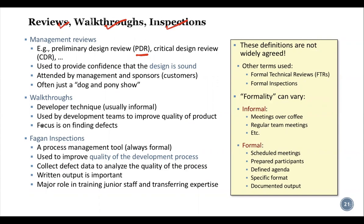The Vagan inspection is one type of formal inspection — a very structured way to provide detailed review. A process management tool is always formal; it is used to improve quality of the development process by collecting defect data to analyze process quality. In Vagan inspection, there is written output that is very important for validation in later stages, especially in the design phase, and it plays a major role in training junior staff and transferring expertise.